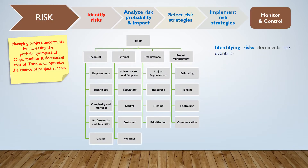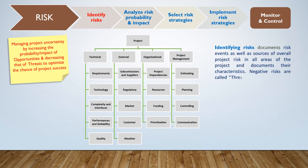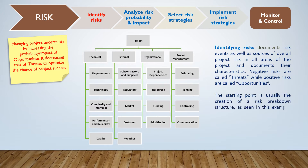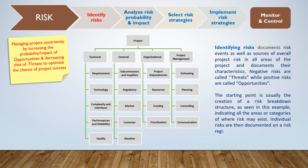Identifying risks documents risk events as well as sources of overall project risk in all areas of the project, and documents their characteristics. Negative risks are called threats, while positive risks are called opportunities. The starting point is usually the creation of a risk breakdown structure, as seen in this example, indicating all the areas or categories of where risk may exist. Individual risks are then documented on a risk register.